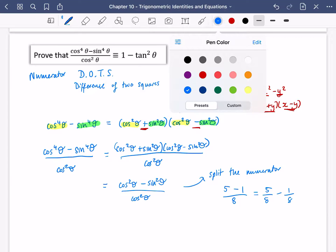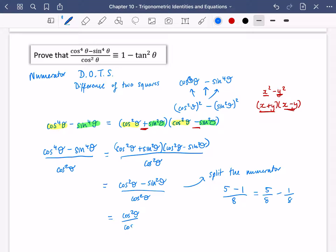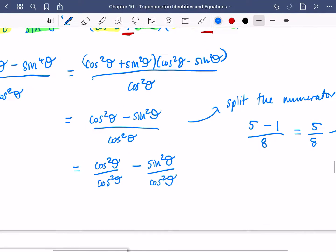So I'm going to split the numerator here so that I have cos squared theta over cos squared theta minus sin squared theta over cos squared theta. See if I can squeeze this in. Well, cos squared divided by cos squared is clearly 1. And sin squared over cos squared is going to be tan squared theta.